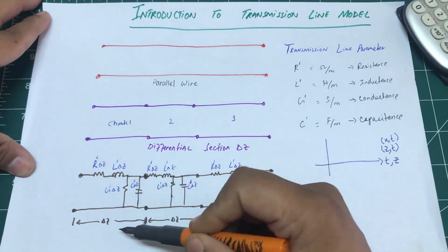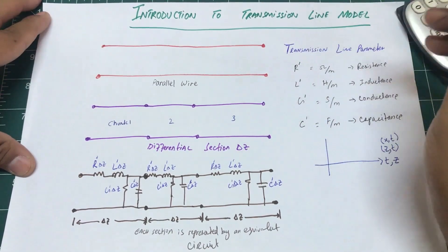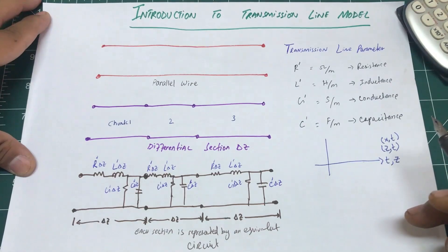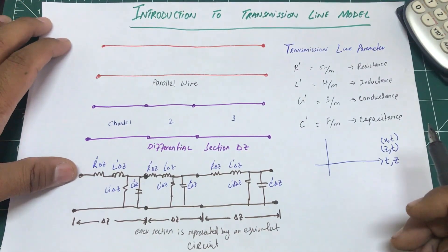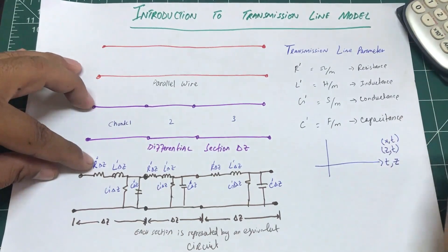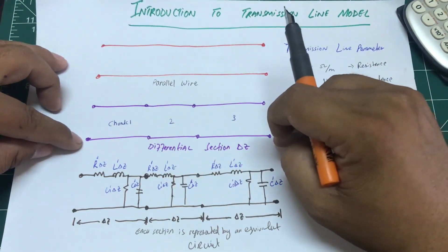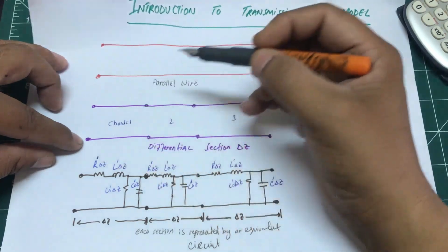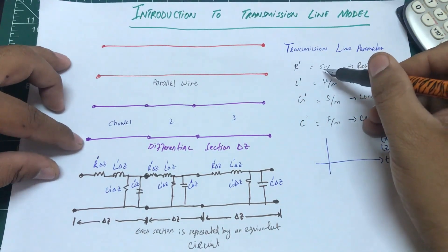I've broken this down into three different chunks, each having a length of delta z. In transmission line theory, we take a small chunk of that piece of wire, analyze it, and come up with impedances. If you look at this smaller piece of wire, it has a behavior of R, L, G, C. When I denote R, L, G, C with a prime on top, it means I'm looking at a smaller portion of that wire — not the entire piece.